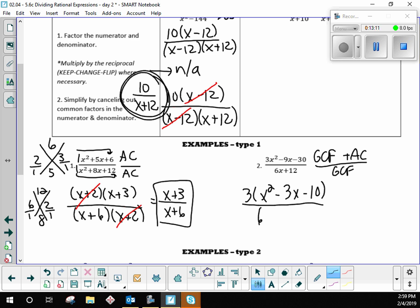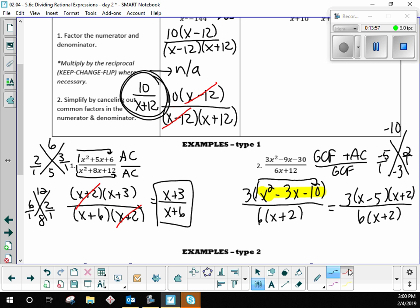And then GCF on the bottom is 6, leaving you x plus 2. So now that we did GCF on the top, we have to factor this trinomial. I'm going to do slide and divide. What multiplies to negative, so the A is 1, slide it and multiply it by C. What multiplies to negative 10 and adds to negative 3? Negative 5 and 2. Divide by the A value, doesn't change anything. So this becomes 3 times x minus 5, x plus 2, over 6 times x plus 2.